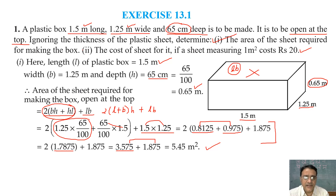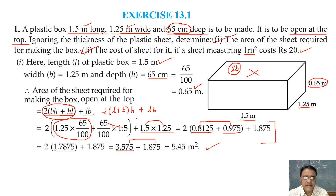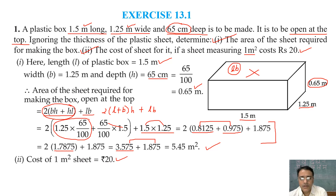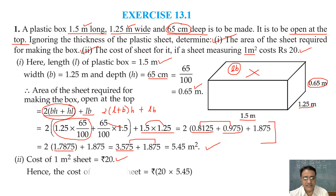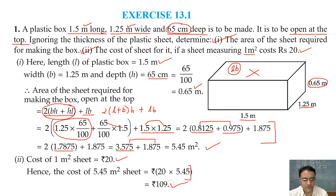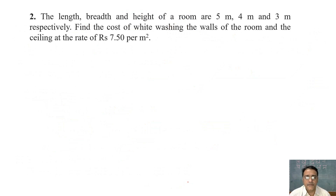The first part is done. For the second part, cost of 1 m² sheet is ₹20, so total cost = 5.45 × 20 = ₹109.